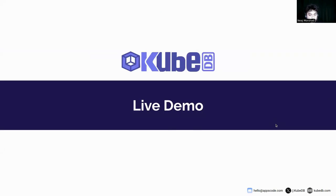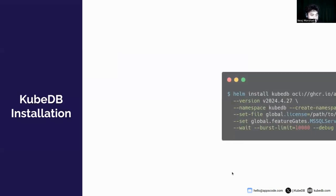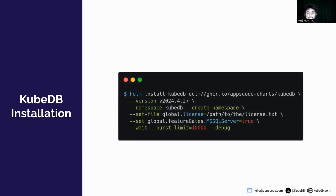Now let's jump into the live demo. First, you need to create a Kubernetes cluster and the kubectl command-line tool must be configured to communicate with your cluster. I am using a kind cluster for this demo. For KubeDB installation, you can install it using the Helm chart command shown here. If you are not using KubeDB right now, you can get a license for a 30-day trial period. Check out kubedb.com for more details.